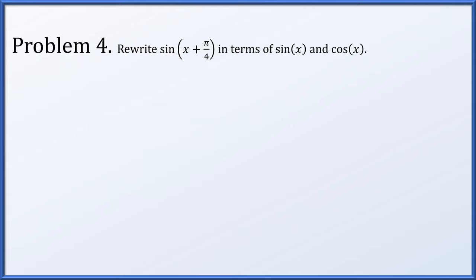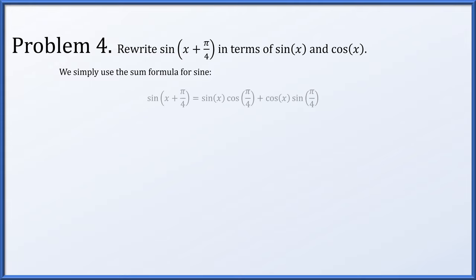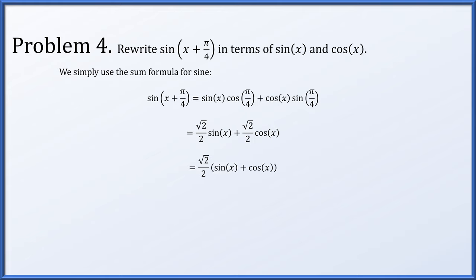For problem 4, let's rewrite sine of (x + π/4) in terms of sine and cosine of just x. This is straightforward — we use the sum formula for sine: sine of (x + π/4) equals sine x cos(π/4) plus cos x sine(π/4). Cosine and sine of π/4 are both √2/2, which can be factored out. So we've rewritten sine of (x + π/4) using just sine x and cos x.